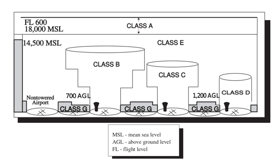If the airspace is not Class A, B, C, or D, and is controlled airspace, then it is Class E airspace. Class E airspace extends upward from either the surface or a designated altitude to the overlying or adjacent controlled airspace. When designated as a surface area, the airspace is configured to contain all instrument procedures. Also in this class are Federal Airways, airspace beginning at either 700 or 1,200 feet above ground level used to transition to and from the terminal or en route environment, and en route domestic and offshore airspace areas designated below 18,000 feet MSL. Unless designated at a lower altitude, Class E airspace begins at 14,500 MSL over the United States, including airspace overlying the waters within 12 nautical miles of the coast of the 48 contiguous states and Alaska, up to but not including 18,000 feet MSL, and the airspace above FL-600. Class E has control services available but VFR pilots are not required to make any contact with ATC.